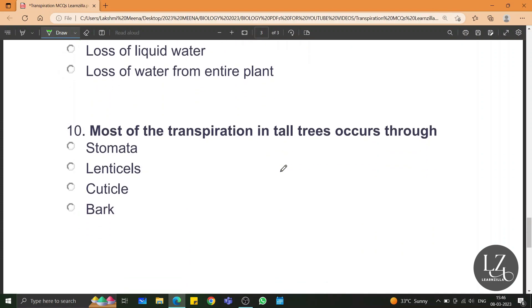Most of the transpiration in tall trees occurs through lenticels. Because lenticels are small pores through which lenticular transpiration takes place. In tall trees, the woody bark is more, so obviously more transpiration is through the lenticels.